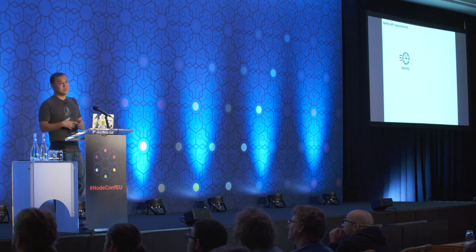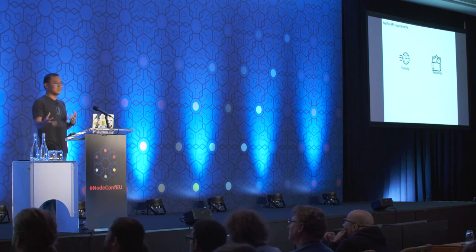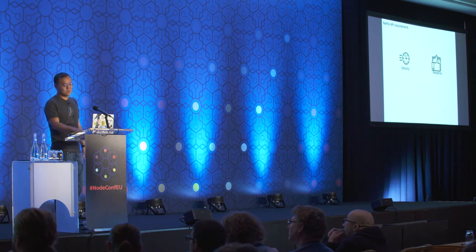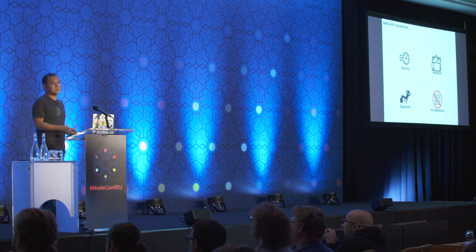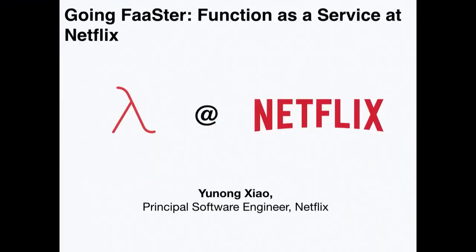We want really high velocity for these BFFs since we're making two or three changes a week to each client. They need to be really reliable — if one of these things is down, the entire client is unavailable, and that's not good for customers. It needs to be really easy to use, and we want to abstract away operations, because the target audience is client engineers with no experience writing services. This is where Function as a Service, JavaScript, and Node really come in handy.